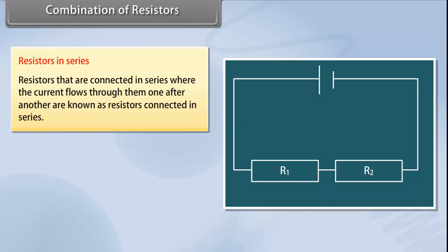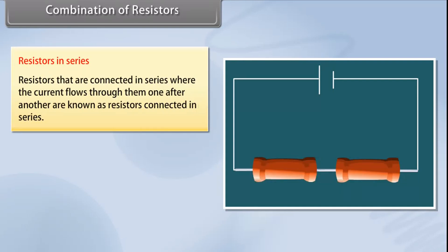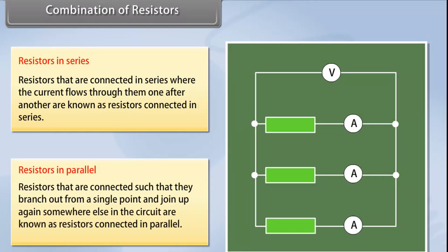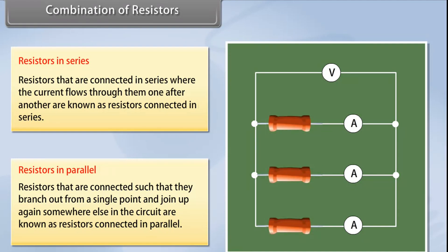Combination of resistors are of two types: resistors in series and resistors in parallel. Resistors connected in series are those where current flows through them one after another. Here, the current depends on the applied voltage, the number of components, and the nature of components in the circuit. Resistors in parallel are those connected such that they branch out from a single point and join up again somewhere else in the circuit. Here, the current through each component is the same as if it were the only component present, so the total current flowing through the battery is the sum of the currents flowing through each branch.